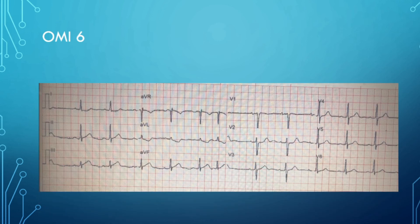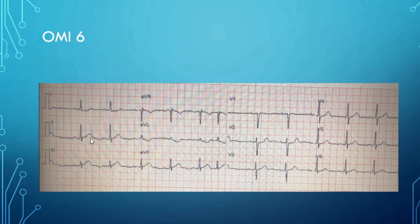By the end of this lecture we should be pros. The inferior leads show hyper-acute T waves and there's a flipped T wave in AVL. Lead 3 especially is very hyper-acute — shooting right off the QRS complex, becoming more symmetric, with a wide base. The T wave is massive relative to the small QRS; you can almost fit the QRS inside the T wave. AVL, its best friend, shows a flipped T wave. It's going to be an inferior wall MI.